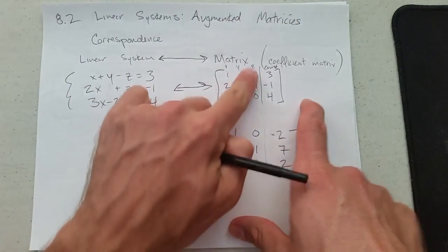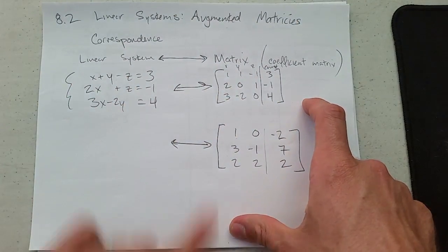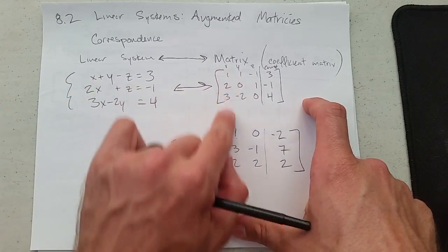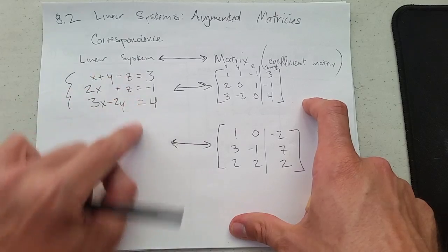So x column, y column, z column, constant column. That's why if you have an x and y swapped here, you'll be very careful because you need to make sure your columns correspond to columns.